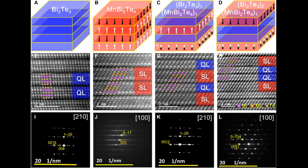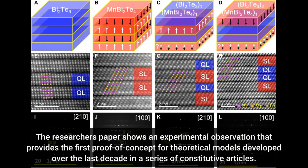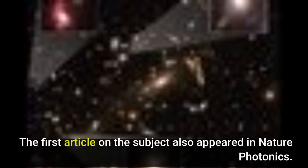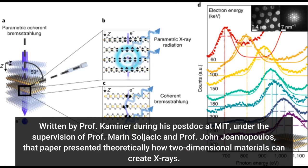The researchers' paper shows an experimental observation that provides the first proof of concept for theoretical models developed over the last decade in a series of constitutive articles. The first article on the subject also appeared in Nature Photonics, written by Professor Kaminer during his postdoc at MIT under the supervision of Professor Marin Soljačić and Professor John Joannopoulos. That paper presented theoretically how two-dimensional materials can create X-rays.